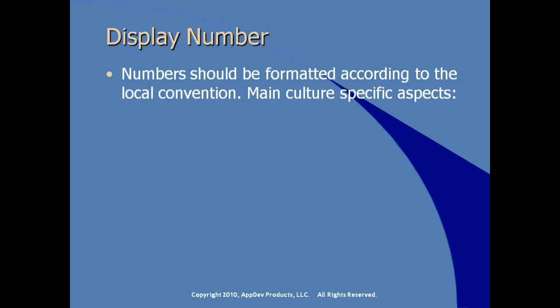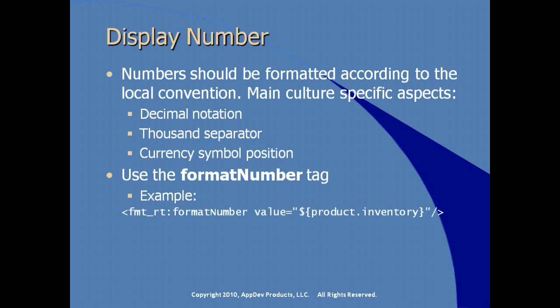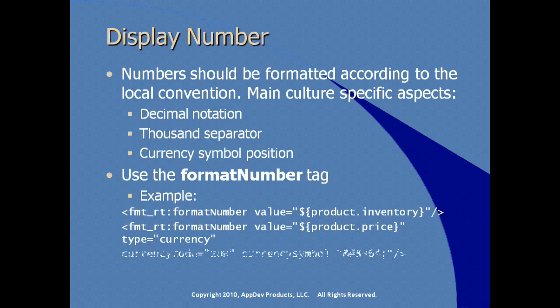If providing internationalization support, keep in mind it affects how numbers are rendered. Numbers should be formatted according to local convention — the main cultural-specific aspects are decimal notation, the thousands number separator, and currency symbol position. To make this easier, use the formatNumber tag in your JSP. For example, using formatNumber with the type attribute set to 'currency' formats a product price as currency. You can also specify the currency code or currency symbol using the standard masking syntax.